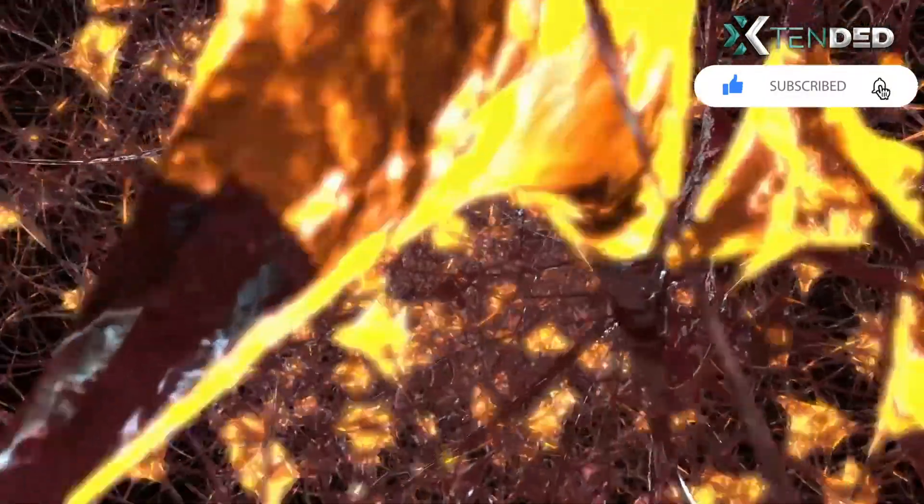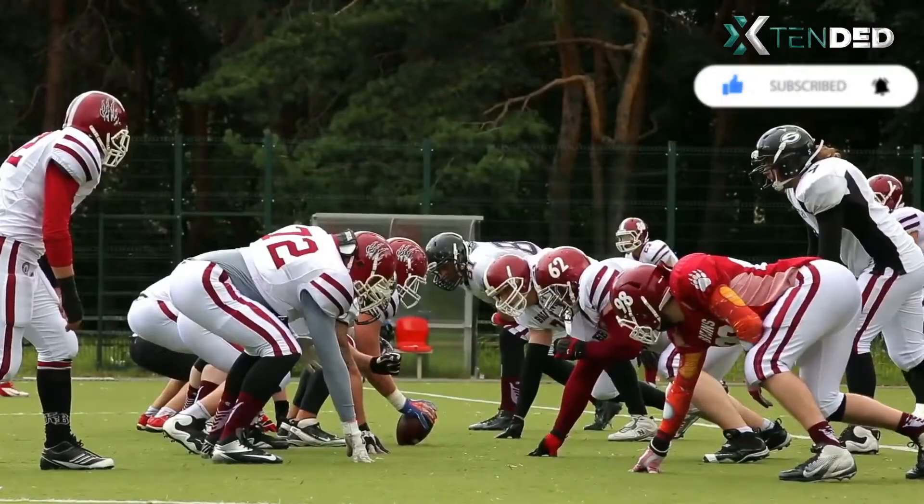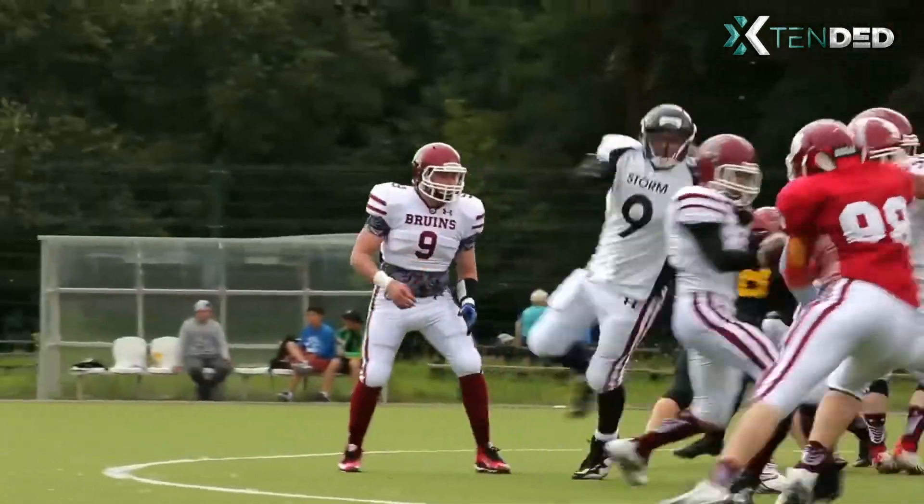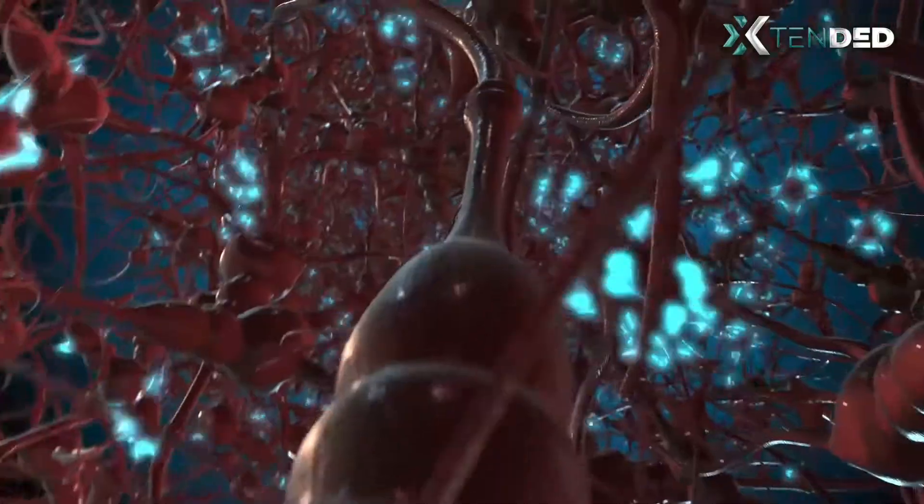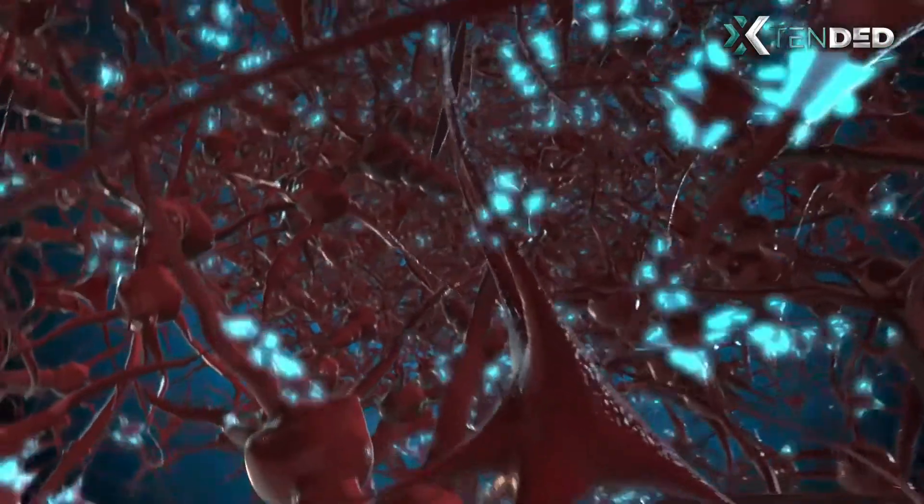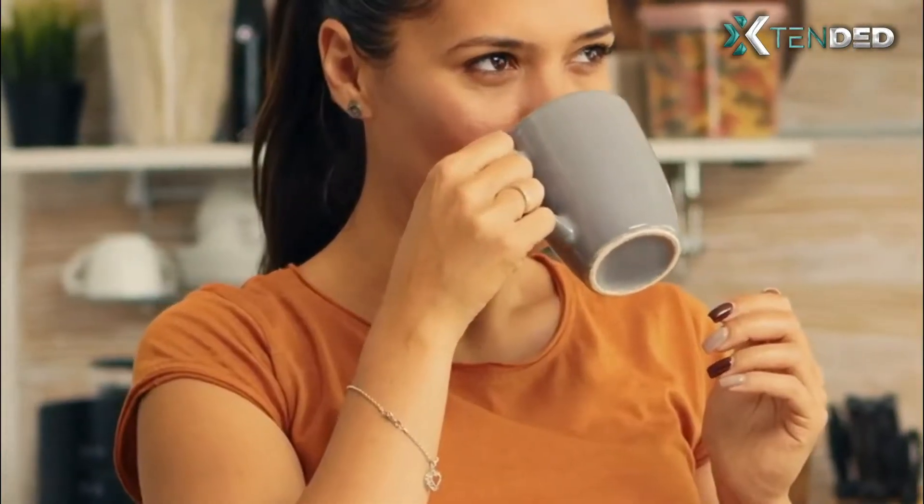Scientists once believed that the neurons of your motor cortex operated like a football team with set rules for each player and different goals for each. According to this theory, one set of motor neurons would take responsibility for you reaching for your coffee, while another set would orchestrate your grasp in the handle.